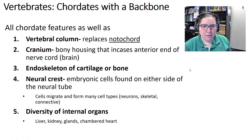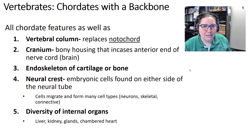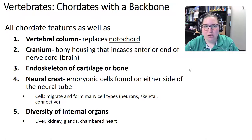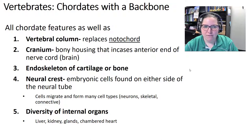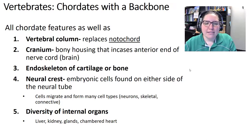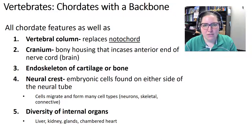Vertebrates are chordates with a backbone. Most animals are not vertebrates, as we've seen. A vertebrate has all chordate features plus a vertebral column replacing the notochord, a cranium housing the brain, an endoskeleton of cartilage or bone, and a neural crest — embryonic cells on either side of the neural tube that can migrate and form neurons, skeletal cells, and connective cells.